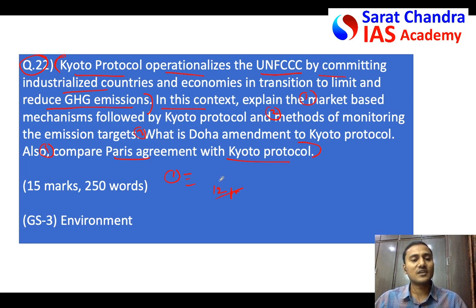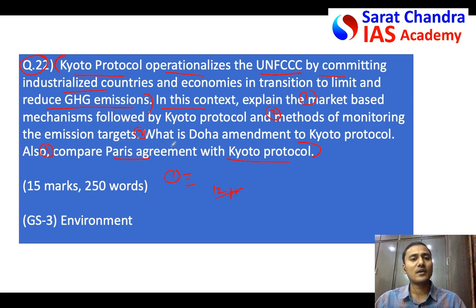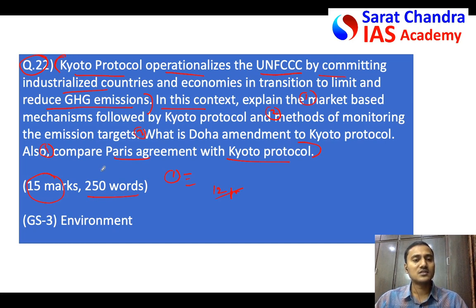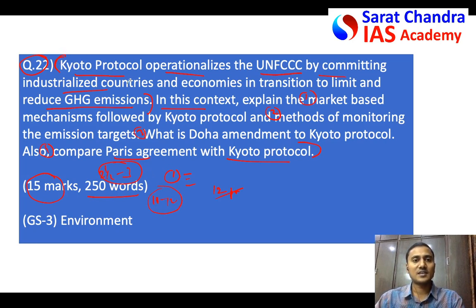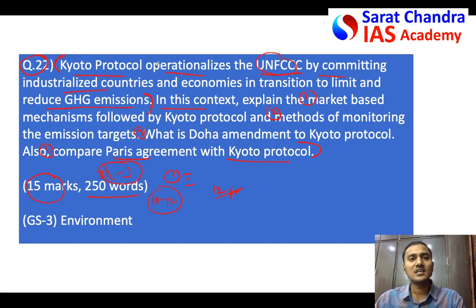A difficult question would be if they asked you only to explain the market-based mechanisms of the Kyoto Protocol — for that single question you would need to write 10 to 12 points requiring deep knowledge. But this question only requires basic ideas, two or three points about each part. Give equal importance to all four parts. This is a 15-mark question requiring about 250 words — roughly two to three pages — and you can take 10 to 12 minutes. Begin with a brief introduction mentioning what UNFCCC and Kyoto Protocol are.